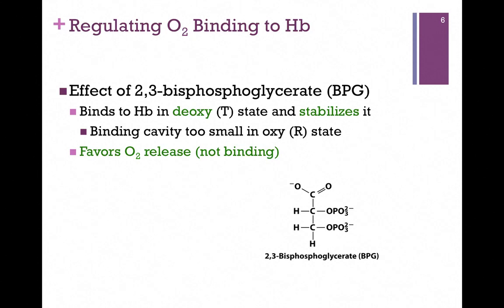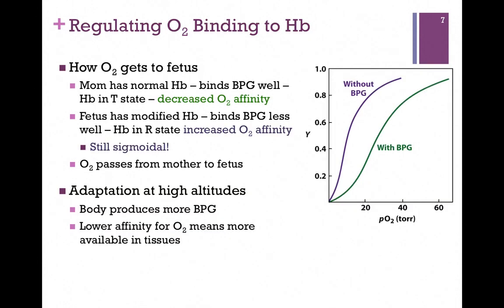This is actually how oxygen gets from mother to fetus in the case of pregnancy. The mother has normal hemoglobin, which means it's going to bind to bisphosphoglycerate in the T state and have a lowered oxygen affinity. In our diagram, we have a fractional saturation curve with partial pressure of oxygen on the x-axis and fractional saturation on the y-axis. The curve for the mother is depicted in green, and in the presence of BPG, it has a reduced affinity for oxygen. The curve is shifted right, which means we have a higher P50 value and therefore a lower oxygen affinity.